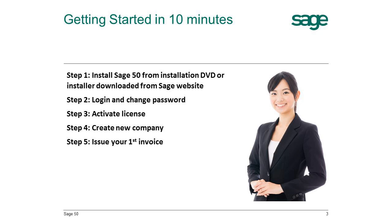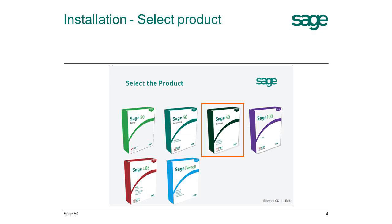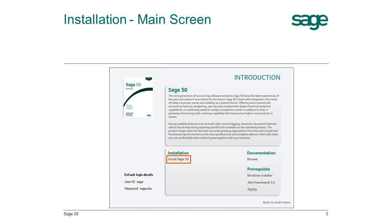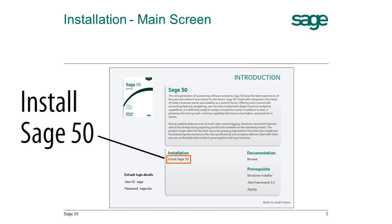Install Sage 50 from the installation DVD or from a downloaded installer from the Sage website. The autorun screen will be shown after you have inserted the DVD in your drive. Select the relevant Sage 50 version. There is an overview if you would like to know more. To start the installation, click on Install Sage 50 and the installation process will begin.